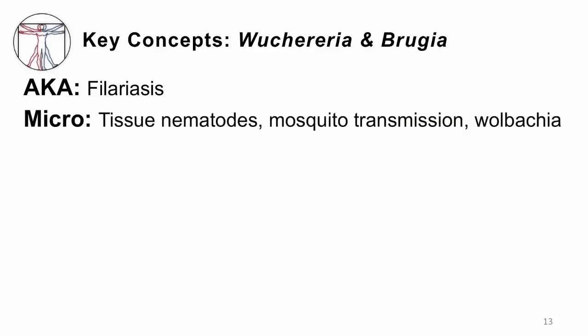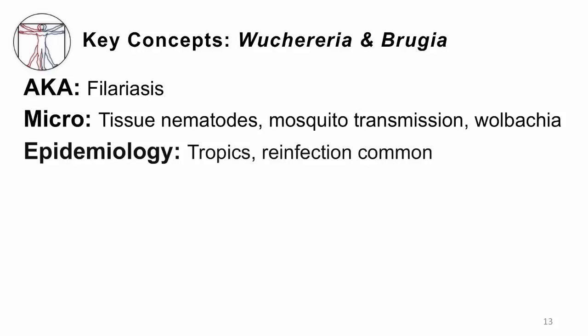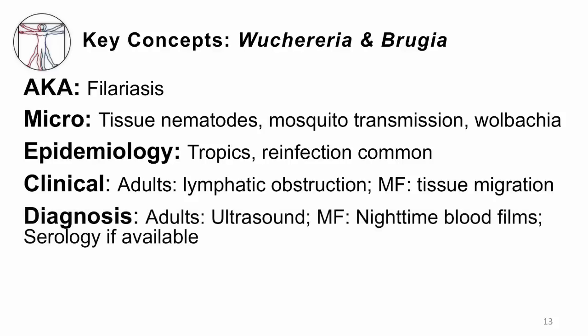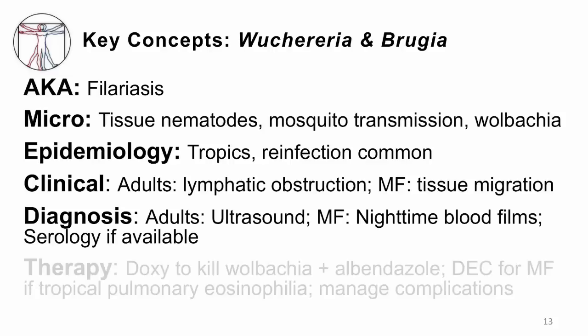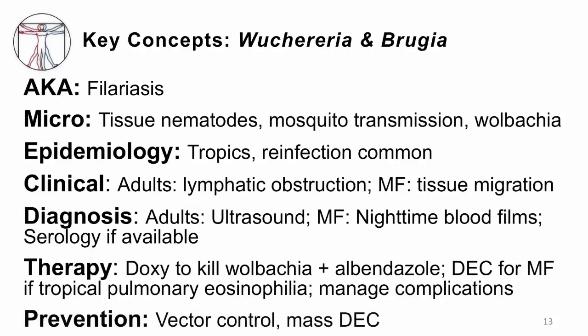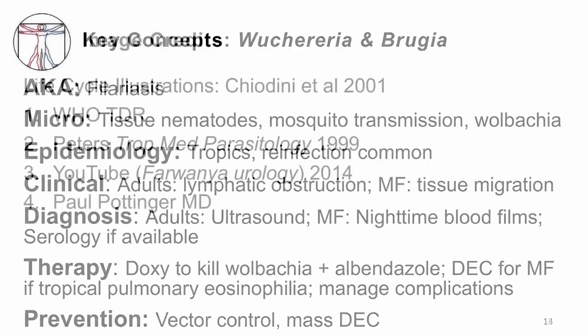The key concepts for Wuchereria and Brugia: they are tissue nematodes transmitted by mosquitoes and contain endosymbiotic Wolbachia bacteria. Clinical disease is mostly due to adult worms in the lymphatic channels causing obstruction and lymphedema, but microfilariae can also cause disease when migrating through tissue, especially the lungs. Diagnose by ultrasound for adults, nighttime blood films for microfilariae, and serology if available. Treat with doxycycline to kill the Wolbachia plus albendazole for the adults; use DEC for tropical pulmonary eosinophilia to go after the babies, and manage cellulitis complications. Prevent by controlling vectors and giving mass doses of DEC to entire populations. Thank you for your attention.